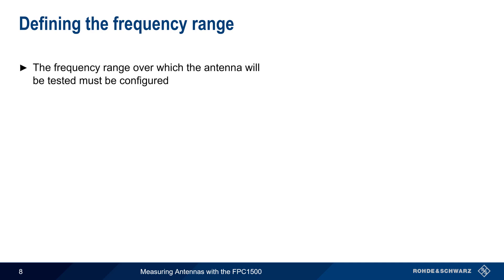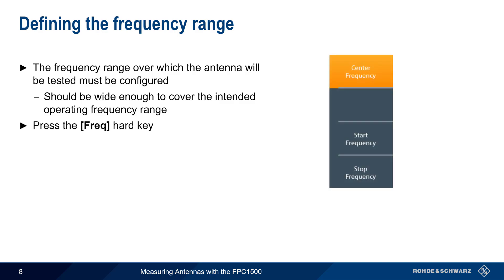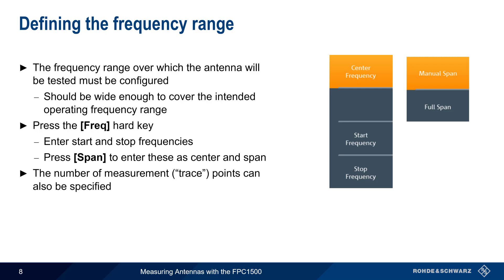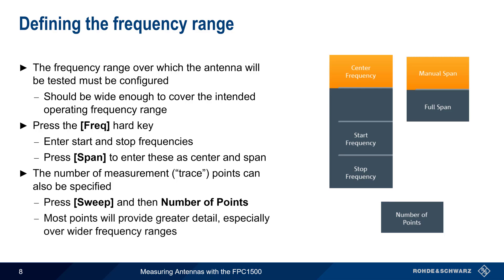We also need to define the frequency range over which the antenna will be tested. This should cover the intended operating frequencies, but may also be expanded to detect any other resonant frequencies. To define the frequency range, press the Frequency hard key and enter the start and stop frequencies. The Span key can also be used to enter these as center and span instead. The number of measurement or trace points over this span can be specified by pressing the Sweep hard key and then adjusting the number of points. A greater number of points will provide greater detail, particularly over wide frequency ranges.